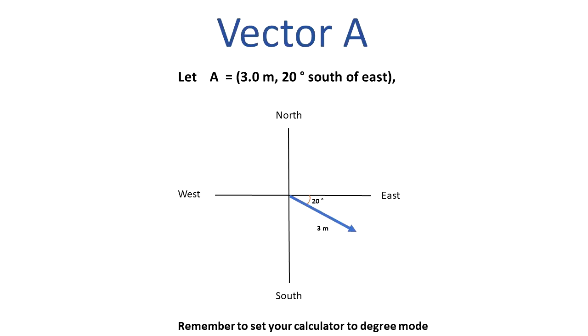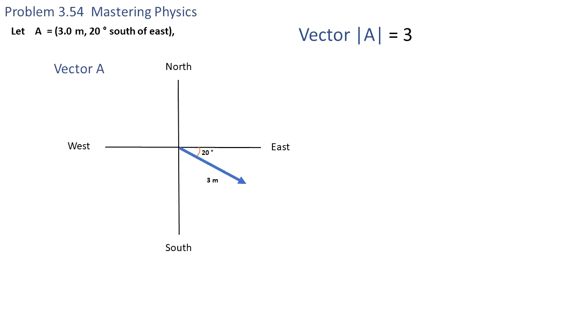Let's find the x and y components of vector A. Vector A has a magnitude of 3 meters and 20 degrees south of east. So we go to the east and shift 20 degrees to the south. That's why it's located in the fourth quadrant.